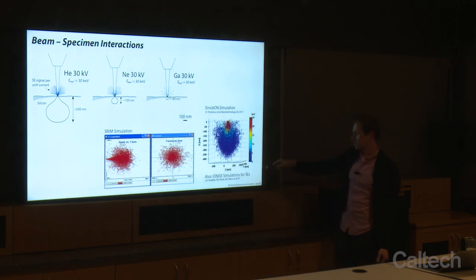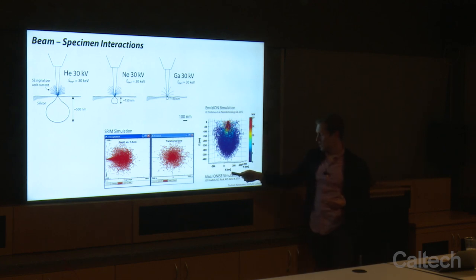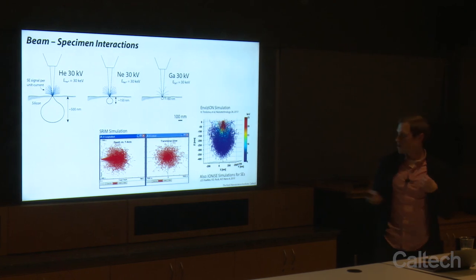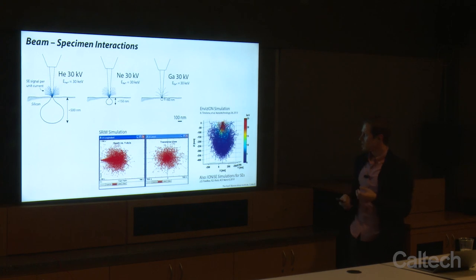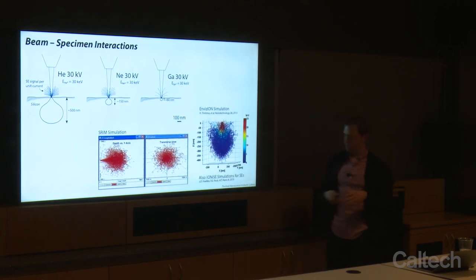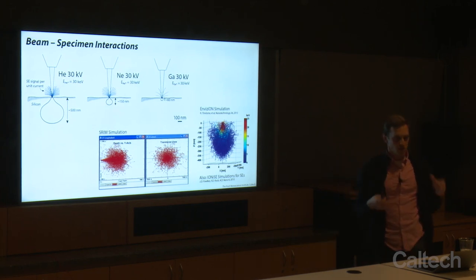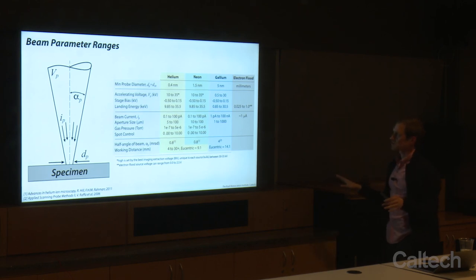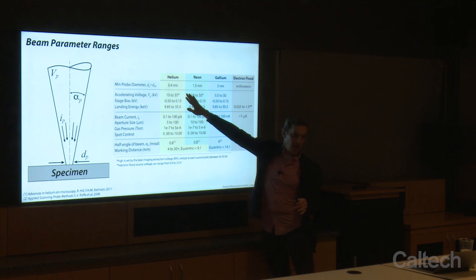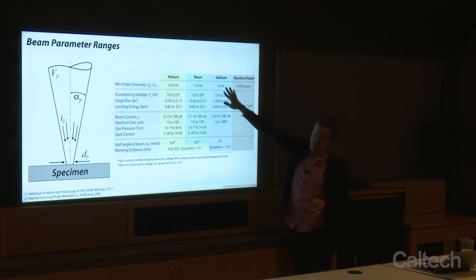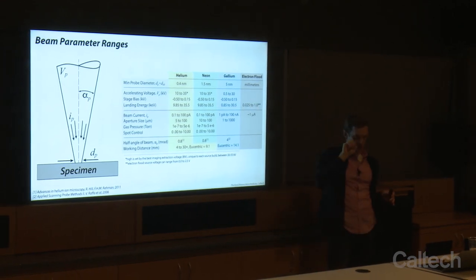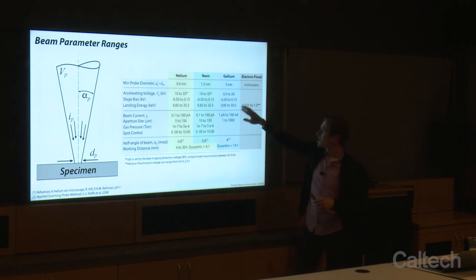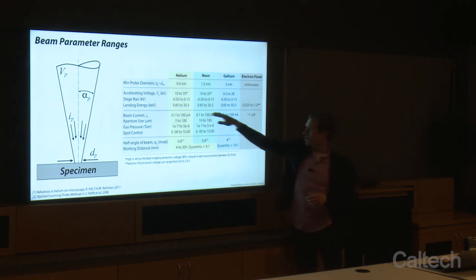Some key beam metrics: minimum probe size of 0.4 nanometers for helium, about 1.5 for neon, and 5 nanometers for gallium. The electron flood gun we'll talk about has a beam spread over millimeters. Accelerating voltage range is about 10 to 35 kV for our GFIS species, 0.5 to 30 for gallium. We also have handouts and YouTube alignment videos for the alignments and procedures we do when operating the system.